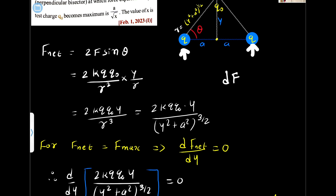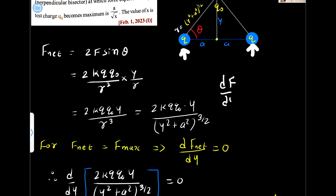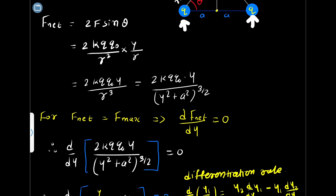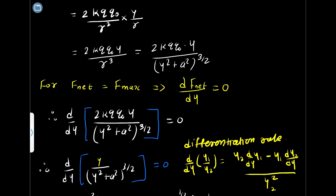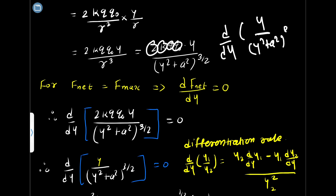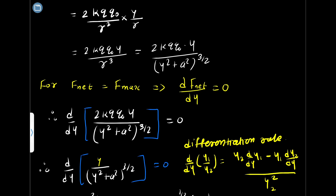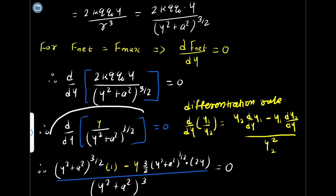For the force to be maximum with respect to distance, we differentiate and set df by dy equal to zero. We need to find the maximum value of f with respect to y, so we differentiate the net force expression. Taking all constants out — 2, k, q, q naught — we differentiate d by dy of y divided by (y squared plus a squared) raised to 3/2.